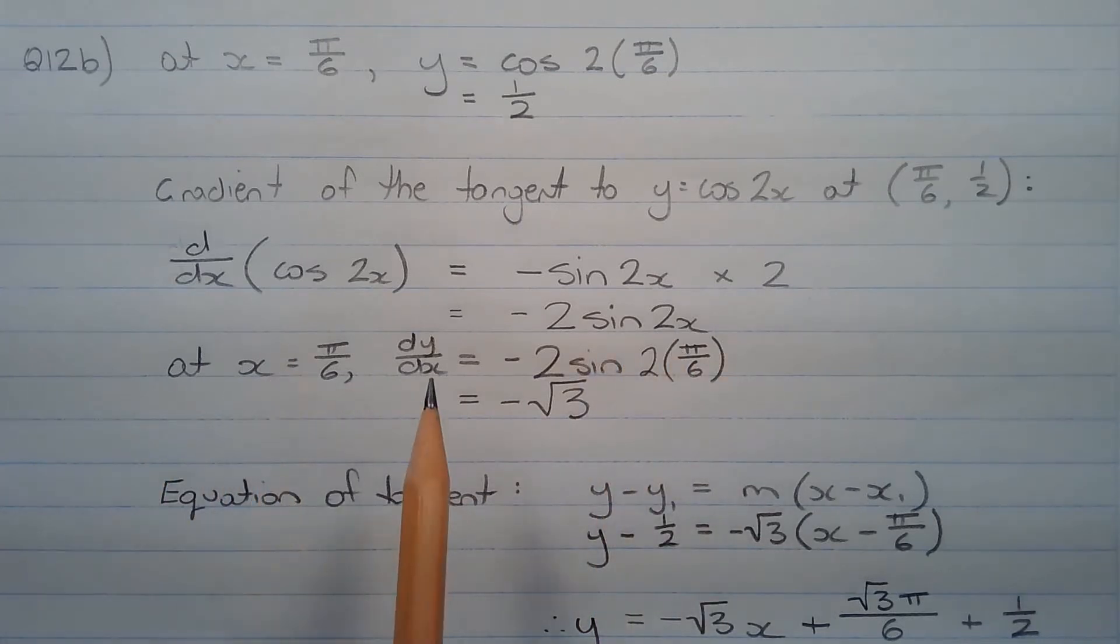At x equals pi over 6, dy dx is equal to negative 2 sine 2 times pi over 6, which equals negative the square root of 3.